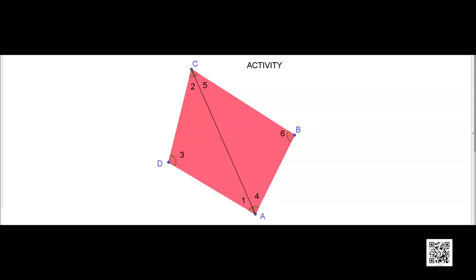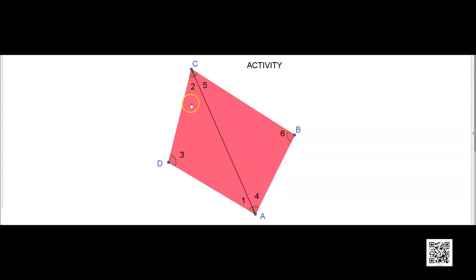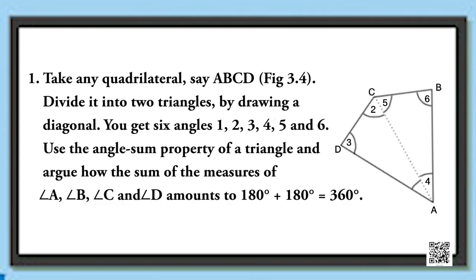Now try this activity on your own. Take any quadrilateral ABCD and divide it into two triangles by drawing one of its diagonals. You will get 6 angles — 1, 2, 3, 4, 5, and 6. Use the angle sum property of triangles and argue how the sum of angles A + B + C + D becomes 360 degrees. Try this activity on your own.